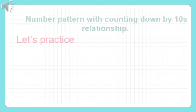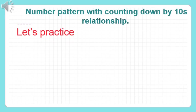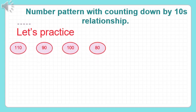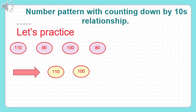Number pattern with counting down by tens relationship. For example, we have: one hundred ten, ninety, one hundred, and eighty. Let's rearrange in descending order or counting down by tens. Start with the biggest number, one hundred ten; minus ten is one hundred; minus ten is ninety; and minus ten is eighty. So from one hundred ten down to one hundred, ninety, and eighty.